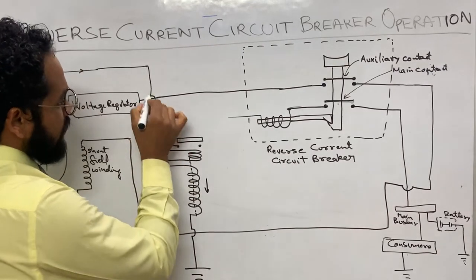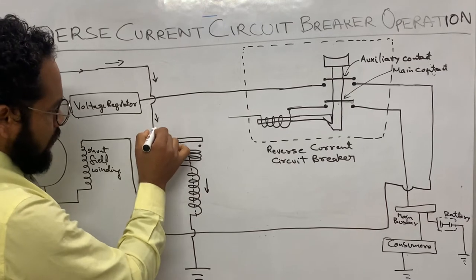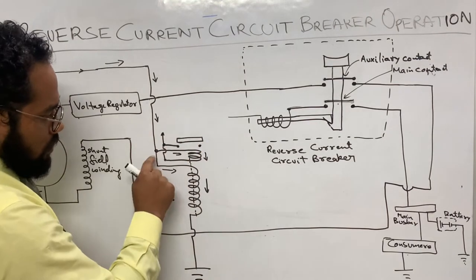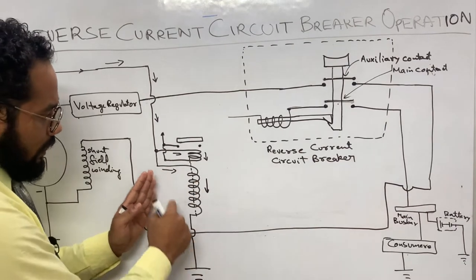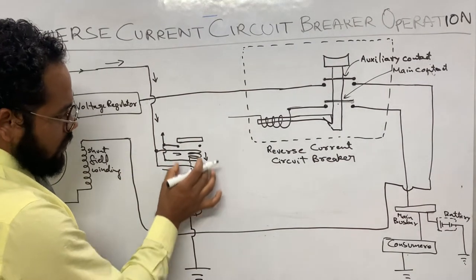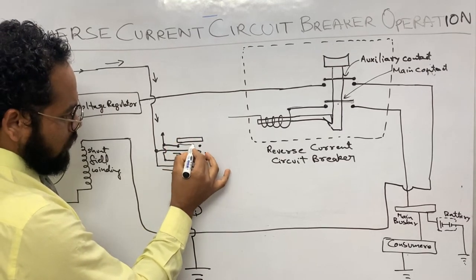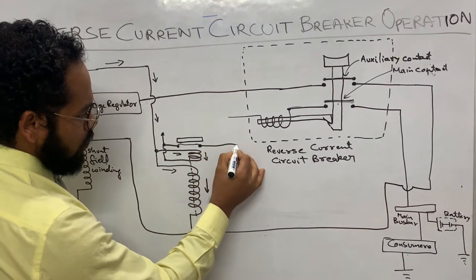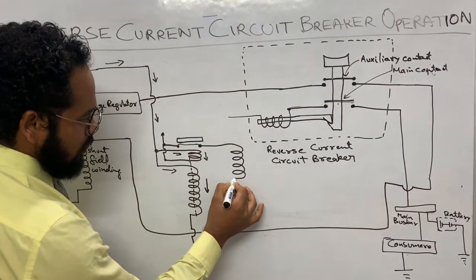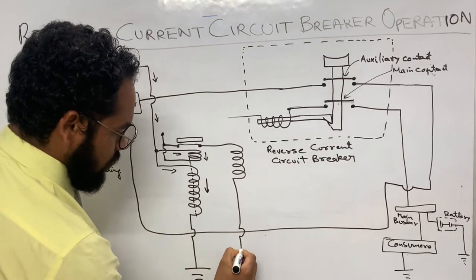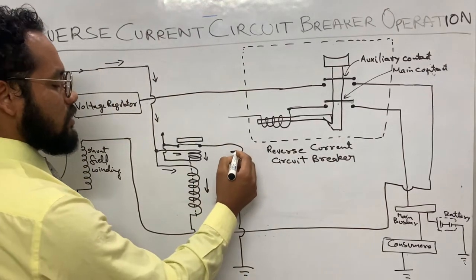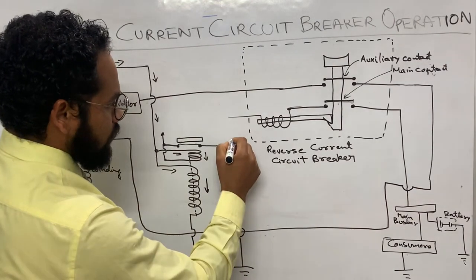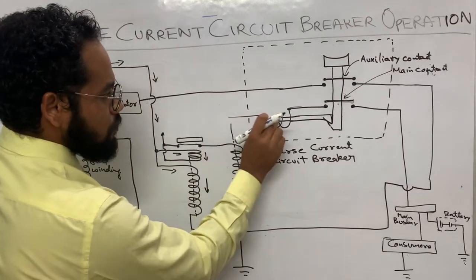Whatever current is coming from the generator goes to the voltage coil and also to the current coil. When the voltage coil is energized it will pull this contact down so the contact closes. This contact is connected to the coil of a line contactor, which is also grounded. So this coil belongs to the line contactor, and that line contactor has a contact here connected to the reverse current circuit breaker.